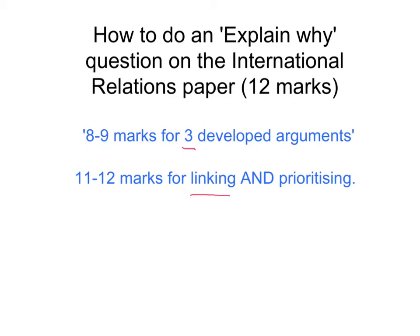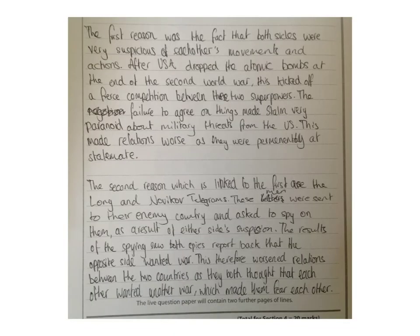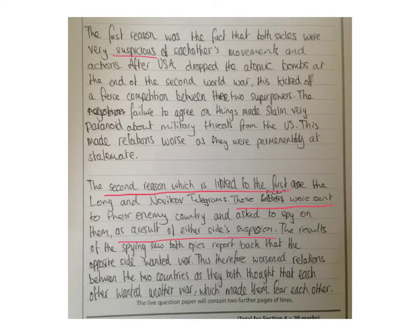Back to the mark scheme — two other things you should be doing are linking and prioritising. Let's have a look at some examples of where that's been done. I love this answer; there's some great technique at work. The first point this person makes is that suspicion is a reason why relations grew worse. The second reason is linked to the first — it's to do with the Long and Novikov telegrams. But he doesn't just leave it there. He goes on to say what the letters were, and as a result, suspicion is mentioned again. So he doesn't just say they are linked — he goes on to explain how they are linked, how the points connect. And that is what propels this person to the very top of the mark scheme.